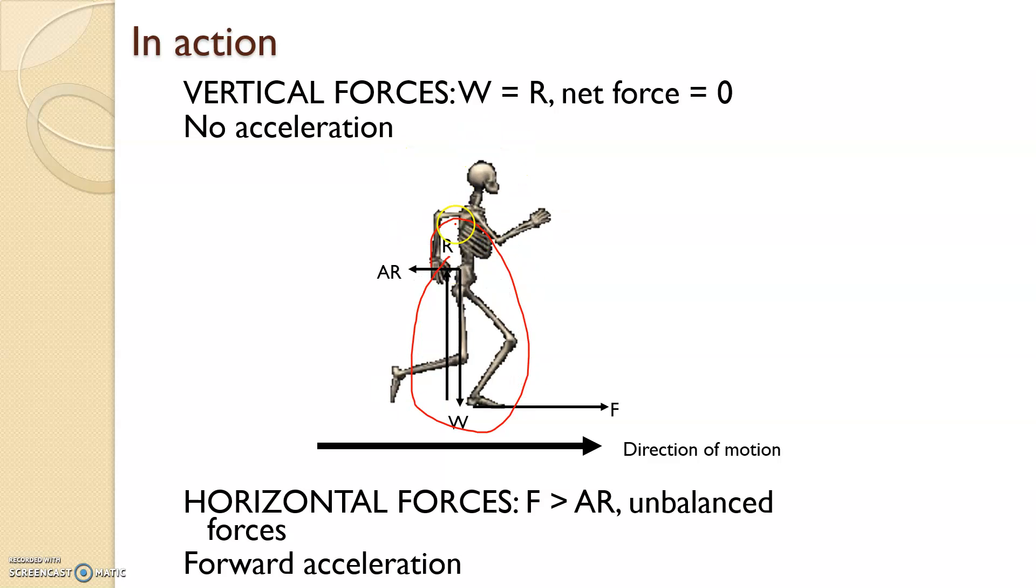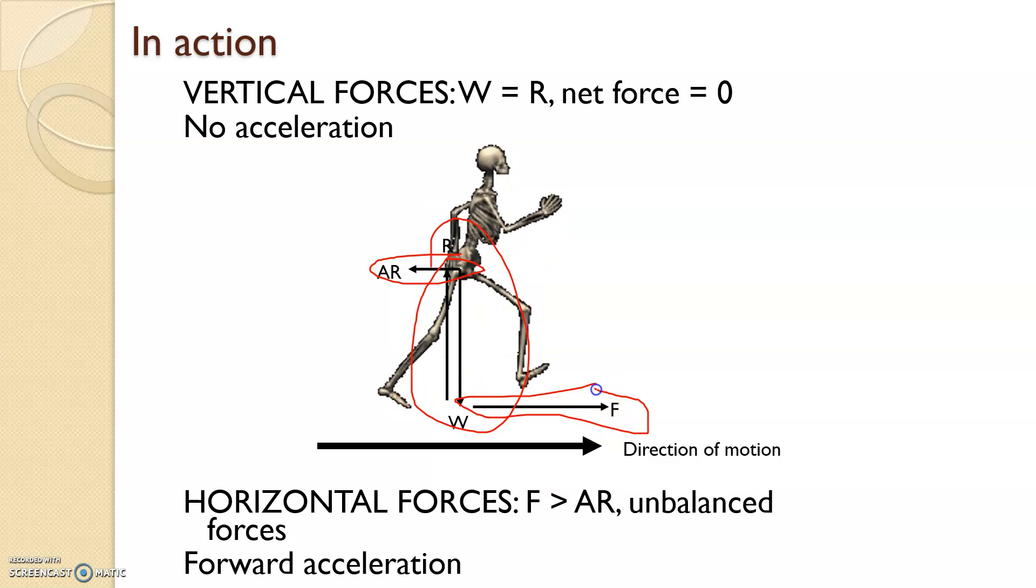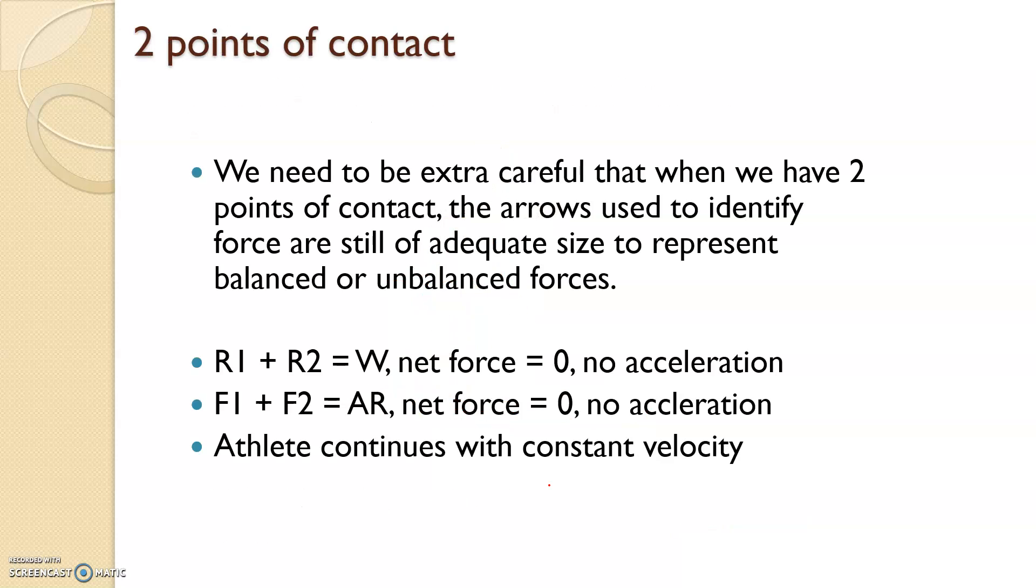Horizontal forces: the friction force is greater than air resistance, hence this arrow is a lot shorter than this, which will mean that the friction force means the direction of motion going right is unbalanced. This lovely skeleton here, dancing along, is moving in that direction. There is forward acceleration.